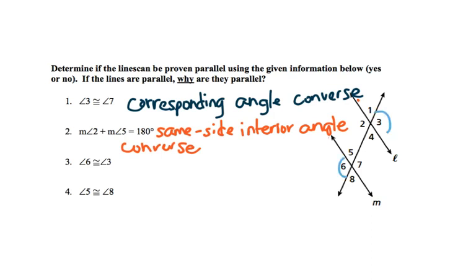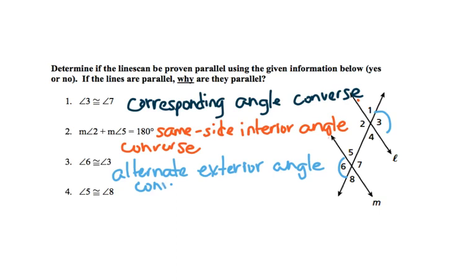Angles 6 and 3 are congruent. They do touch lines L and M, so they can prove parallel lines. This would be the alternate exterior angle converse. Angles 5 and 8 are vertical angles, so this is a no.